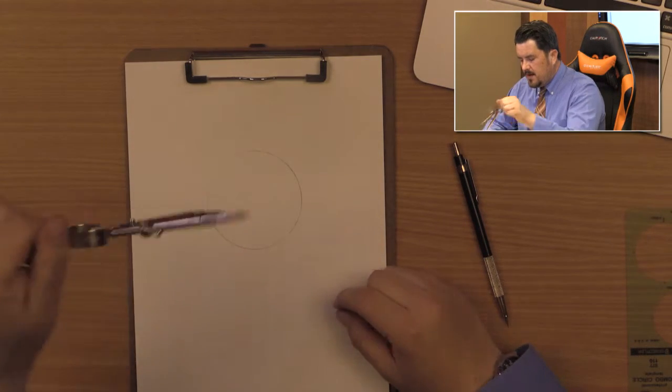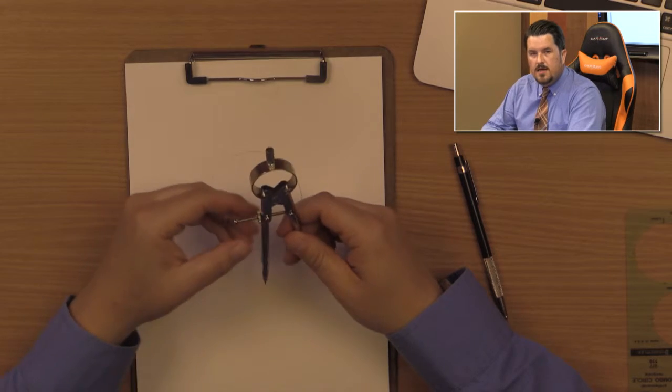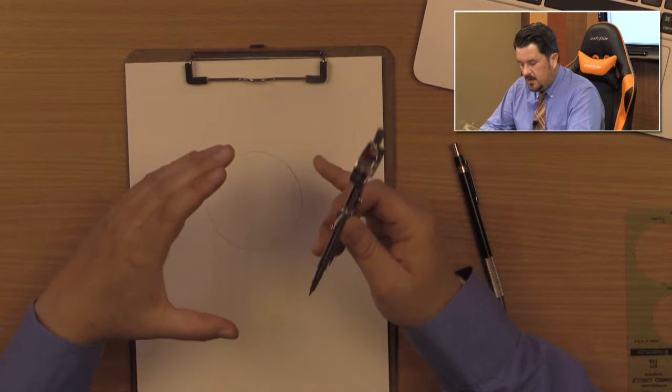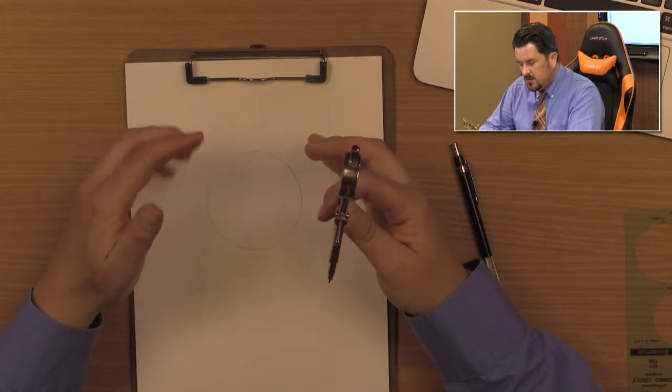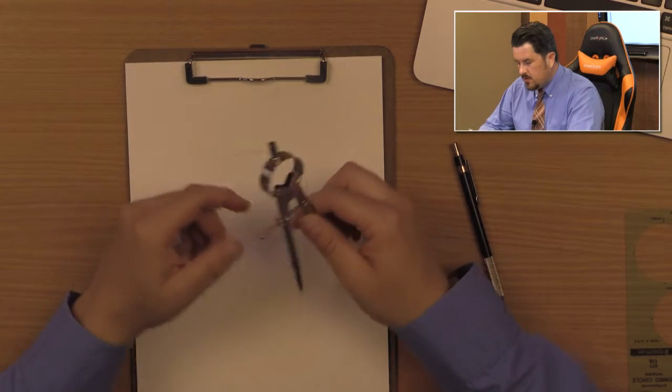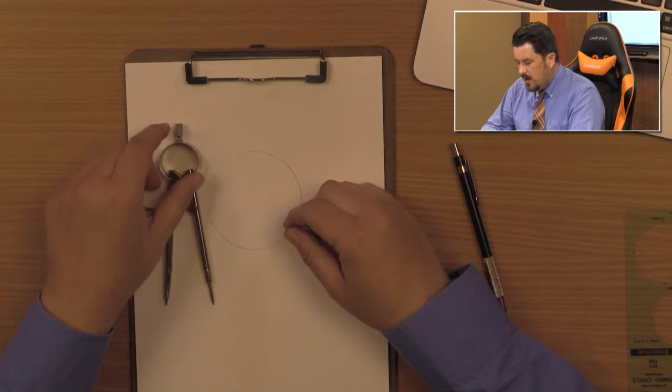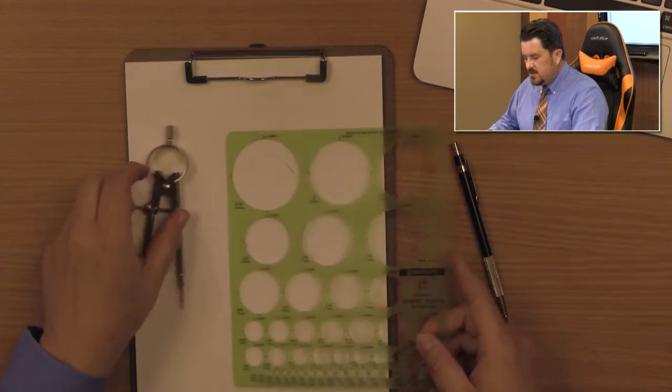The only bad part about it though is compasses generally make a circle at the perspective of the entire circle itself. So you have the diameter shown. Now, if you try to do any type of oblong shapes or anything like that, you're going to run into problems.